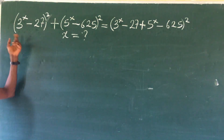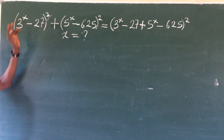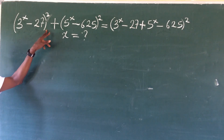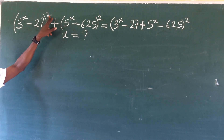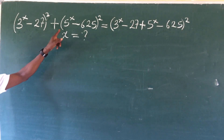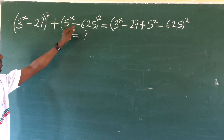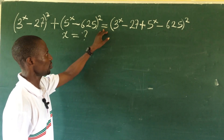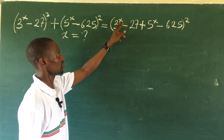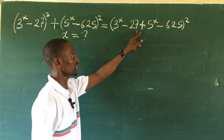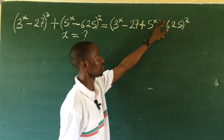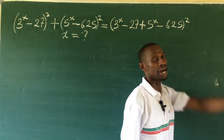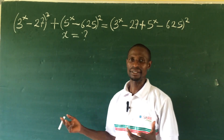The question reads: (3^x − 27)² + (5^x − 625)² = (3^x − 27 + 5^x − 625)². So how do we handle this?